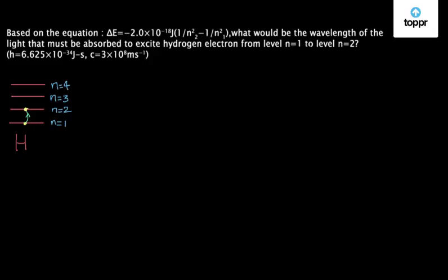We are given the equation of energy change: delta E equals minus 2.0 times 10 to the power minus 18, multiplied by 1 over n2 squared minus 1 over n1 squared, and this energy is in joules.